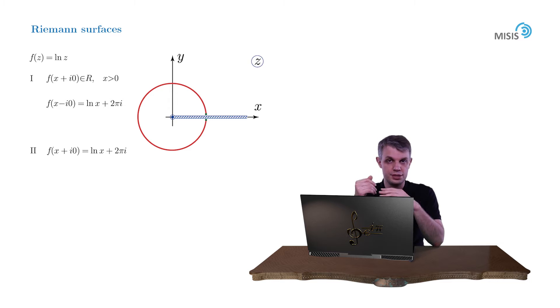To distinguish it from the previous regular branch, let's position it on a different complex plane. Again, it's a complex plane with a branch cut from 0 to plus infinity, but on the upper bank of our branch cut this function has the value log x plus 2πi.